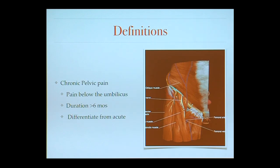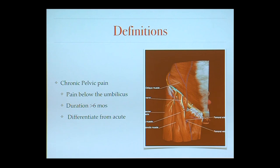Chronic pelvic pain is described as pain below the umbilicus or belly button that lasts for more than six months. It's different from acute pain because it usually has a slower onset. It is possible to have acute pain that is the initial part followed by chronic pain, and sometimes patients can have chronic pain with acute episodes where it worsens.